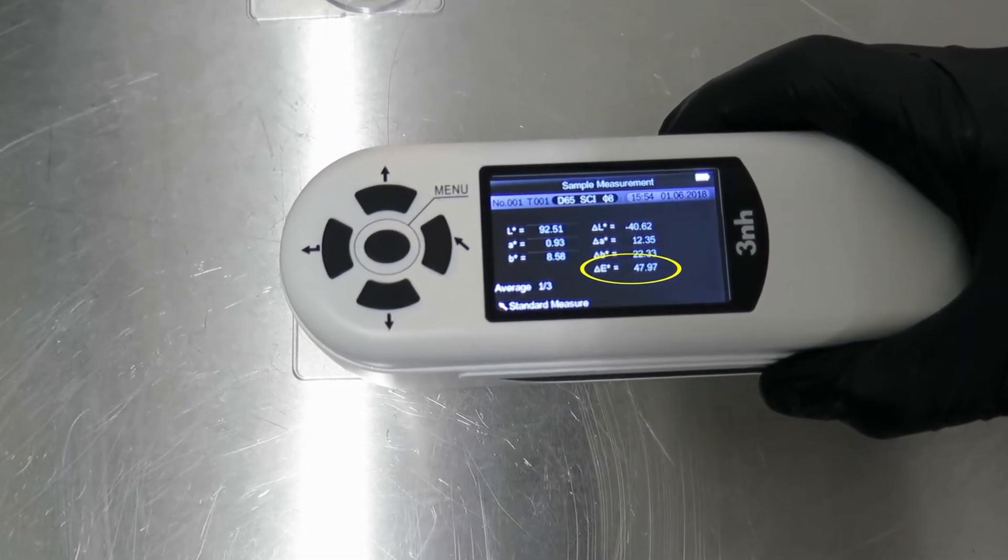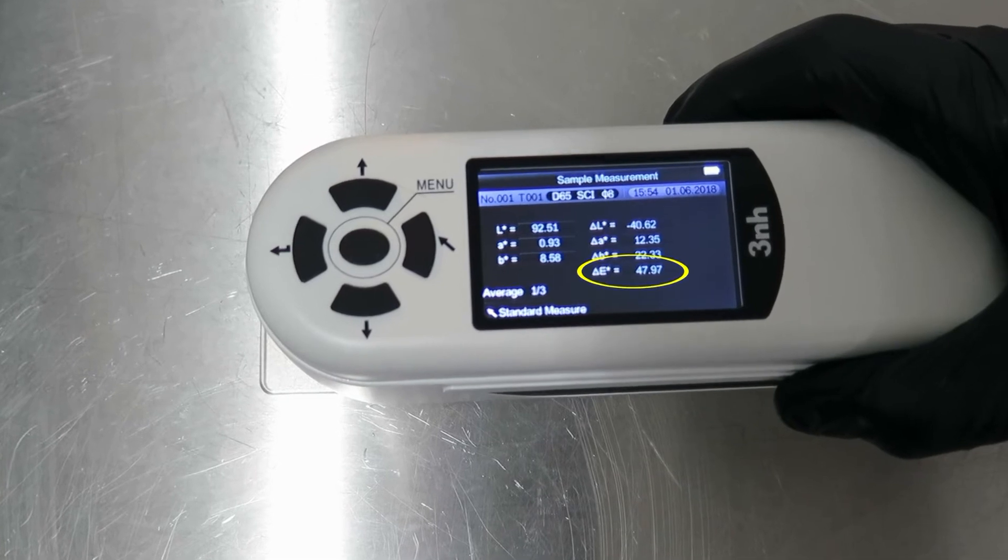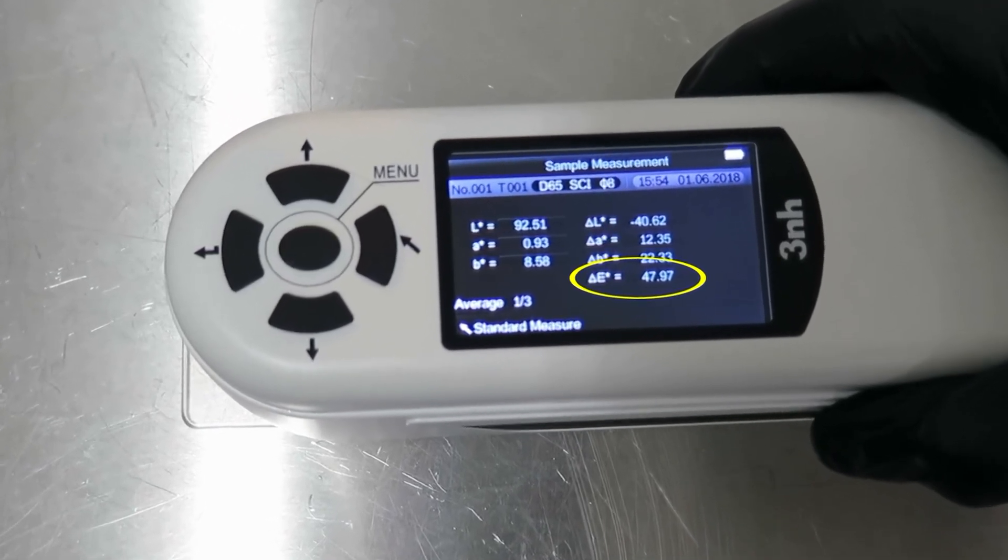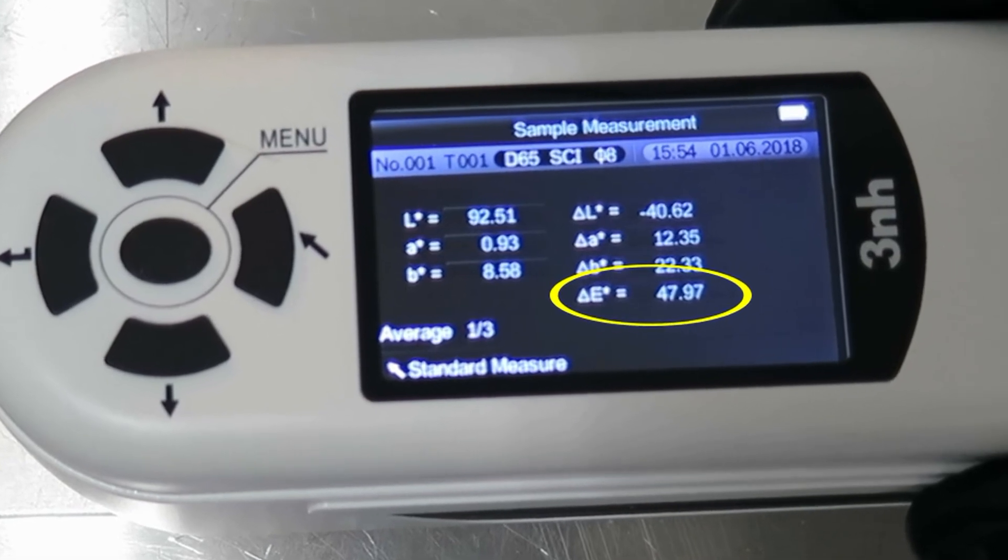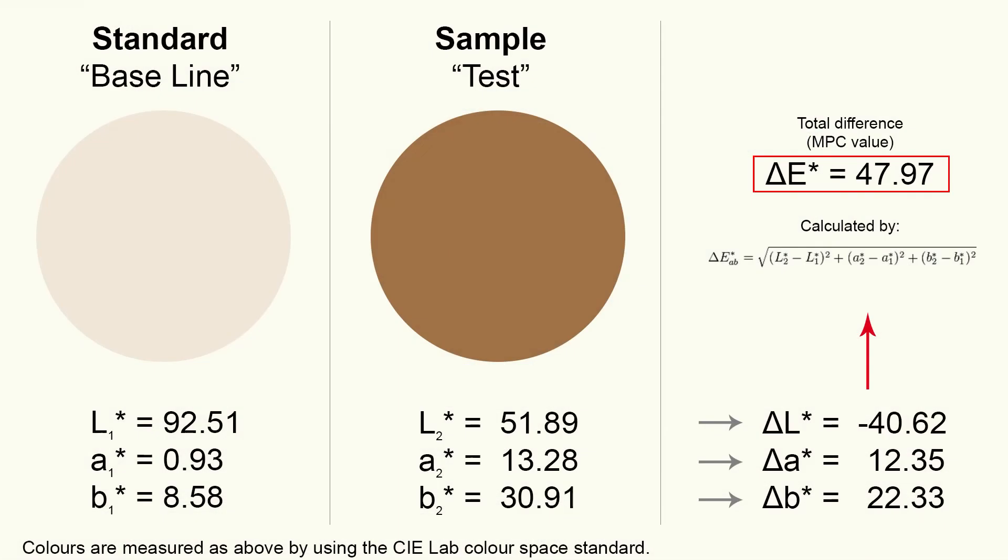The delta E value shown is the color difference between the new and the used oil samples. This delta E value is the MPC value. Delta E describes the difference in color between new and aged oil. This allows us to record and track chemical degradation through the buildup of varnish. We can also measure improvement in the oil condition through the removal of varnish.